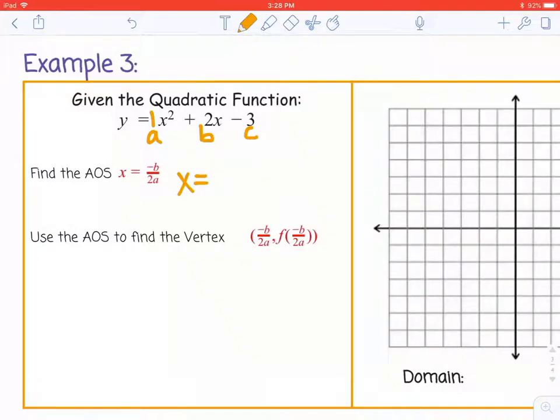We need to find x = -b, which is -2, over 2 times 1. That simplifies to -1. So x = -1 is our axis of symmetry.